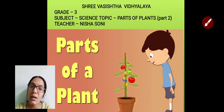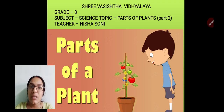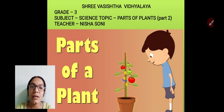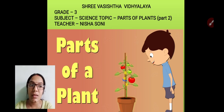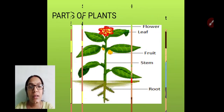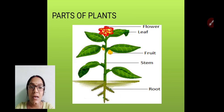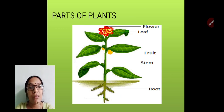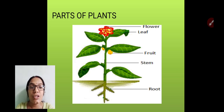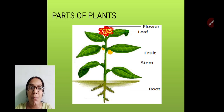Hello children, how are you all? I hope you all are in the best of your health. Today myself Nisha Soni is here with you all again to share Part 2 of Parts of Plant, a science topic for Grade 3. In Part 1 we covered the two main parts of the plant — the root system and the shoot system. Roots are usually underground and the shoot is usually above the ground.